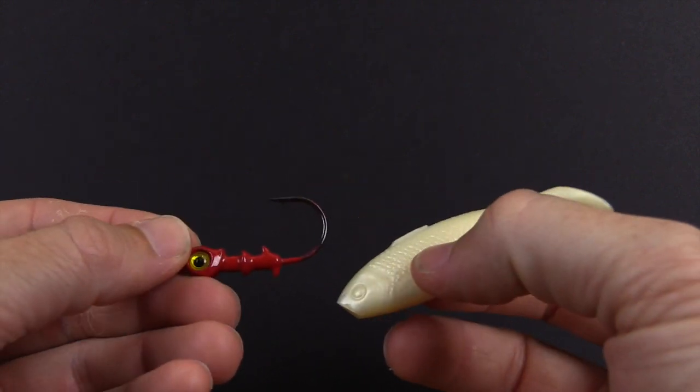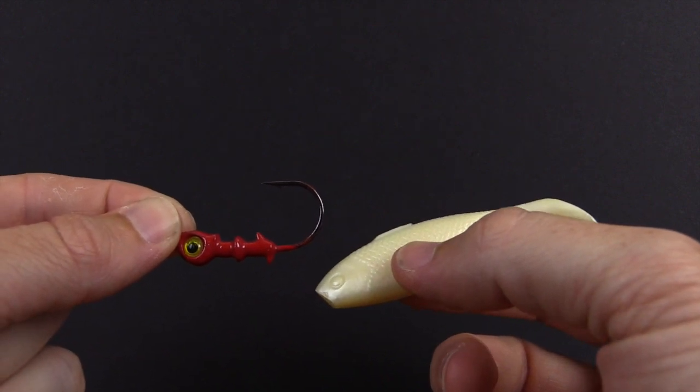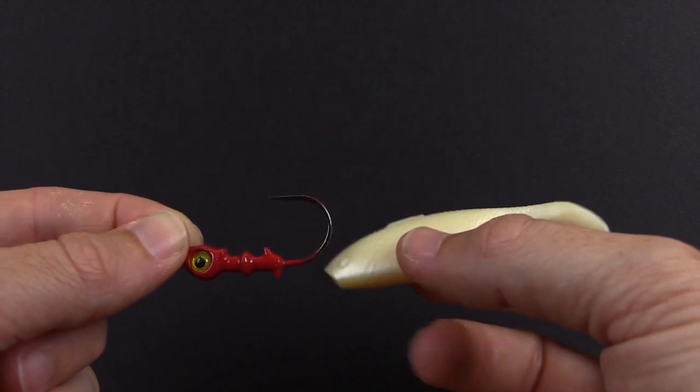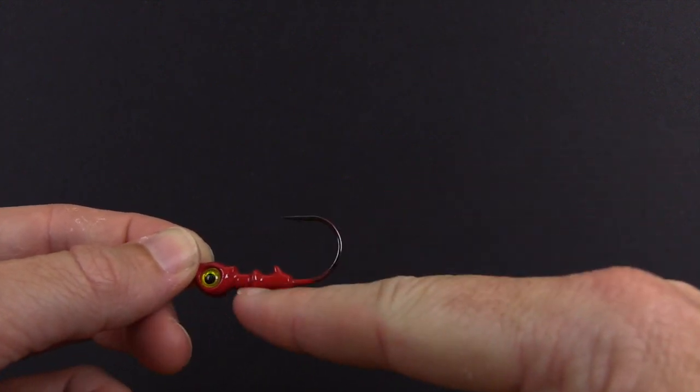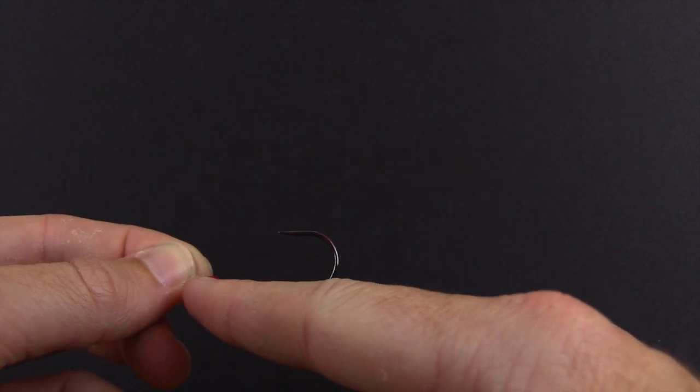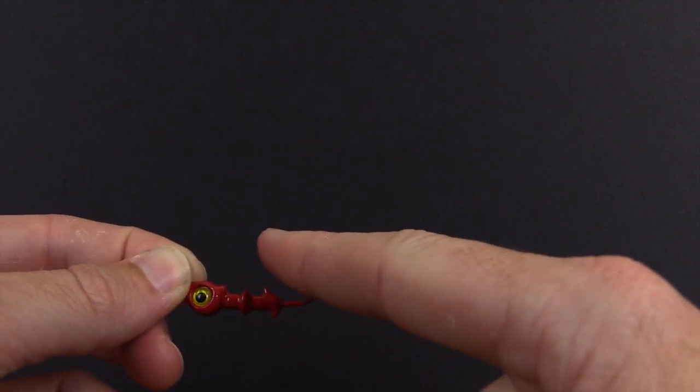What I'm going to be using is this jig head, a one-eighth ounce jig head. A ton of different brands are out there, a lot of great ones. What I would say to look for is one with a short shank, meaning that there's not much distance between the actual head and the bend of the hook.